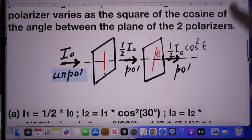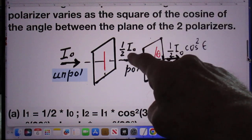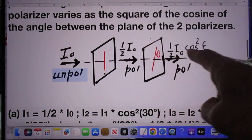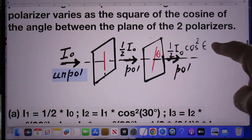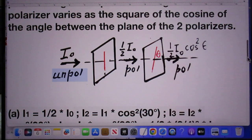And then the intensity that comes out is this one-half I₀ which goes in, times the cosine squared of the angle theta, and it is polarized in that direction. That's Malus's law.